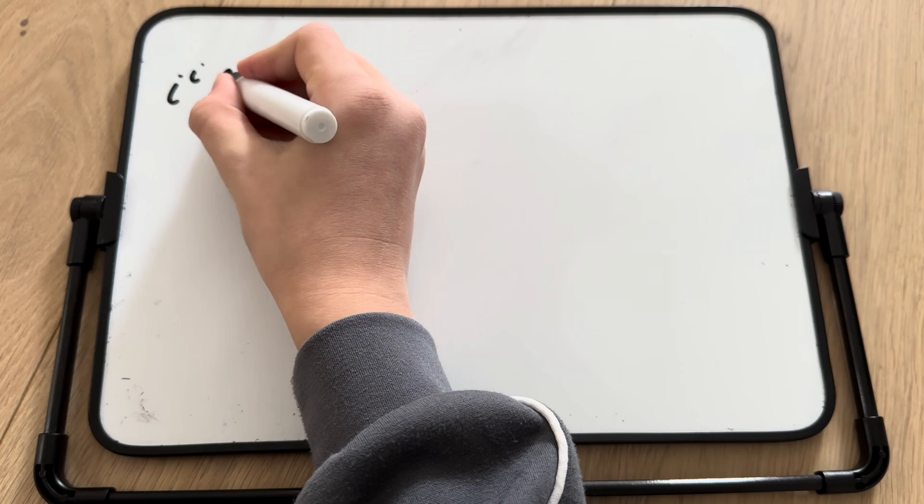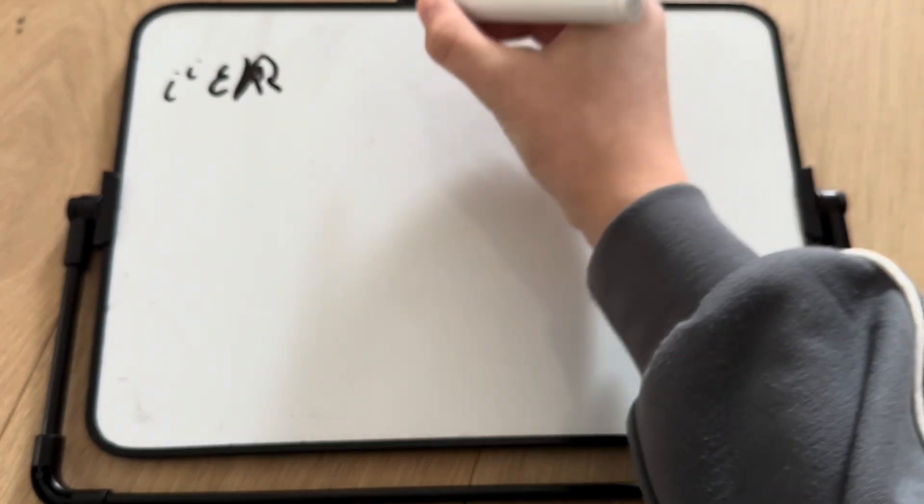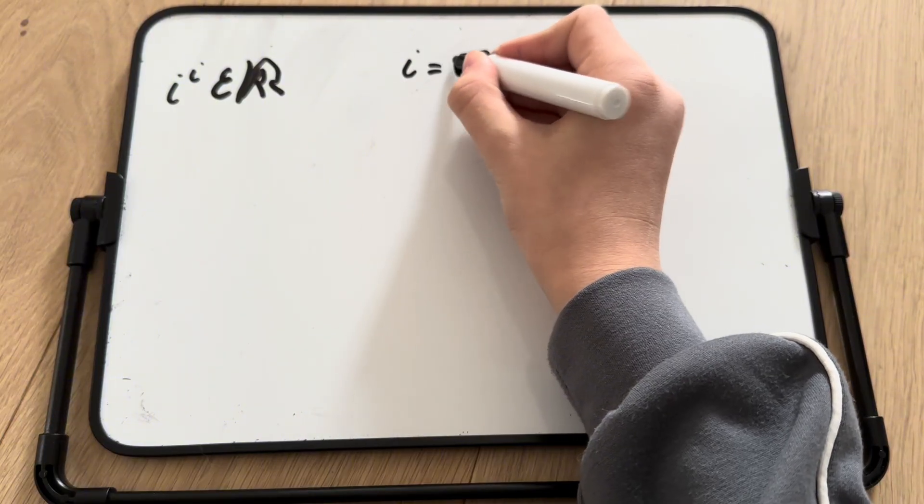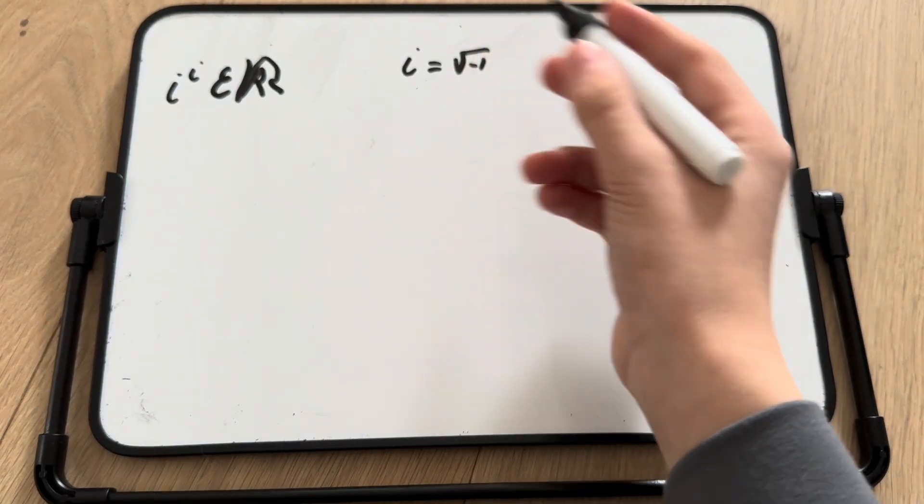So this is how we know i to the i is a real number. Well, first of all, we just have to look at the definition. i is just equal to the square root of negative 1, right? But since we know that, we can just use e to the power of pi i plus 1 is equal to 0.